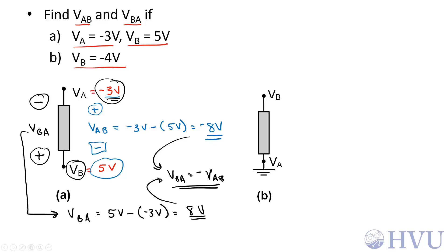In the second case, VB is equal to negative 4 volts relative to some reference. GND is typically the reference voltage if it's given, so that corresponds to 0 volts.